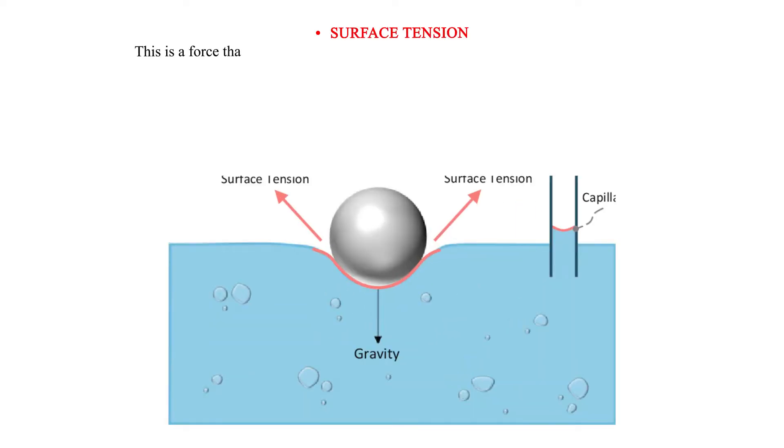Surface tension is a force that causes the surface of a liquid to behave like a stretched plastic skin. The force is due to the attraction between individual molecules in a liquid.